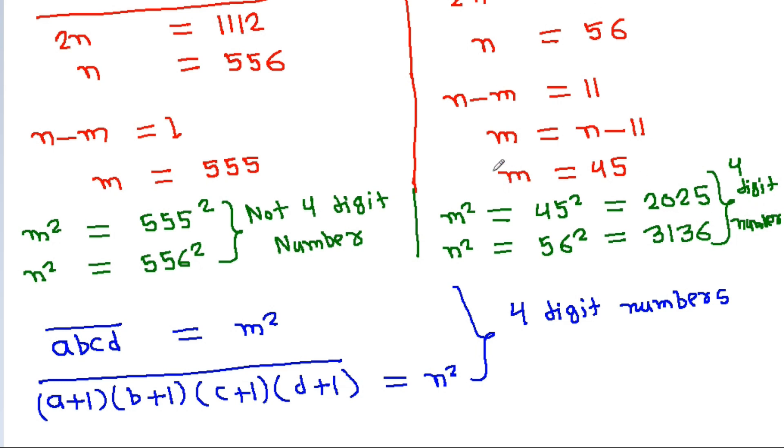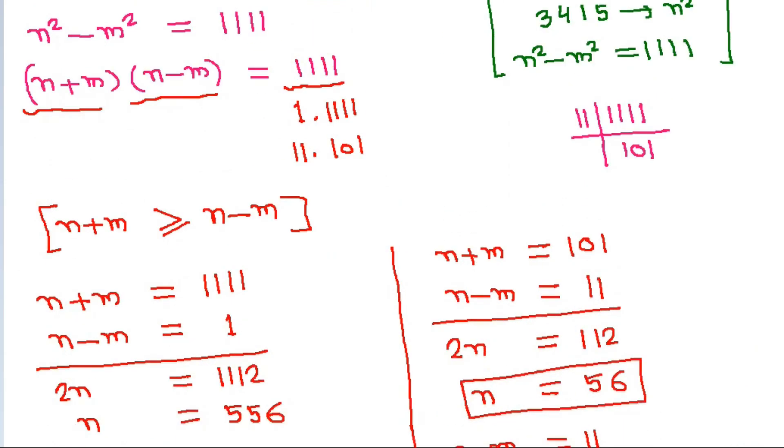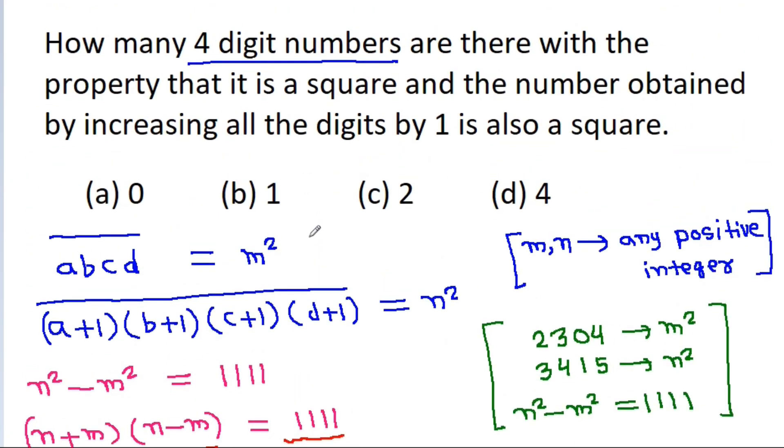So M will be equal to 45 and N will be equal to 56. That means the number of such numbers is 1.